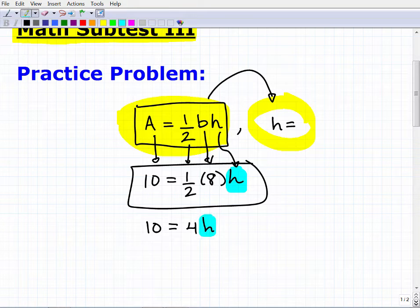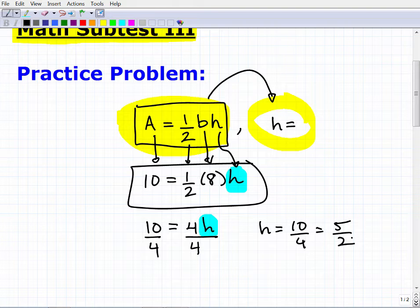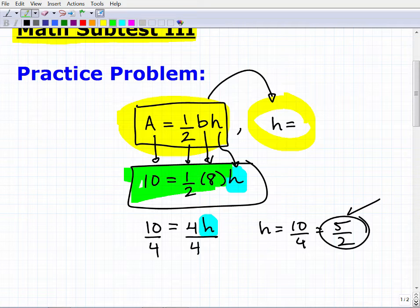It's going to be 10 equals one-half times eight is four times H. Now you're saying to yourself, to solve for H, I'm going to divide both sides of the equation by four. So H is equal to 10 over four, and then we can reduce that down to five over two. You would be exactly correct.